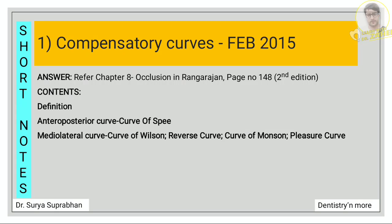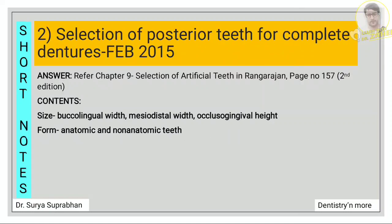For compensatory curves, refer to chapter 8, occlusion in Rangarajan, page number 148. You have to write what is compensatory curves, then the two types — the anteroposterior curve and the mediolateral curve. Under anteroposterior, write about the curve of Spee, and under mediolateral, write about the curve of Wilson, Monson curve, anti-Monson curve, and pleasure curve.